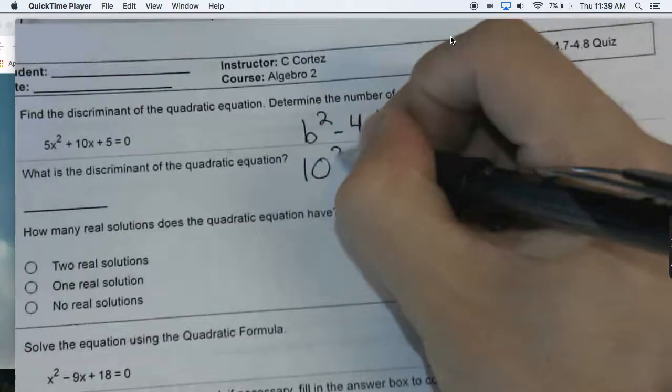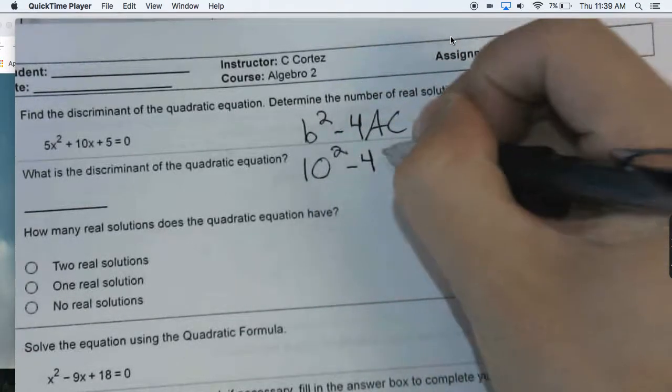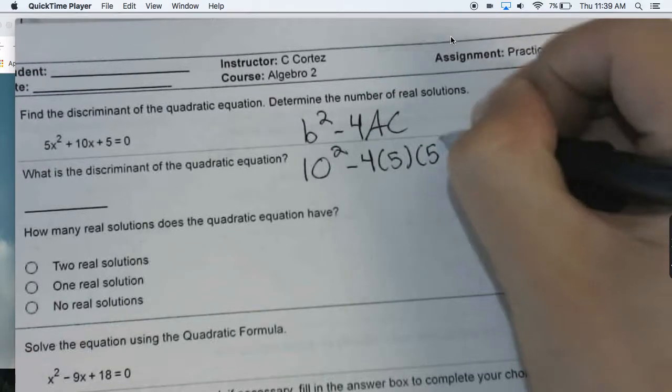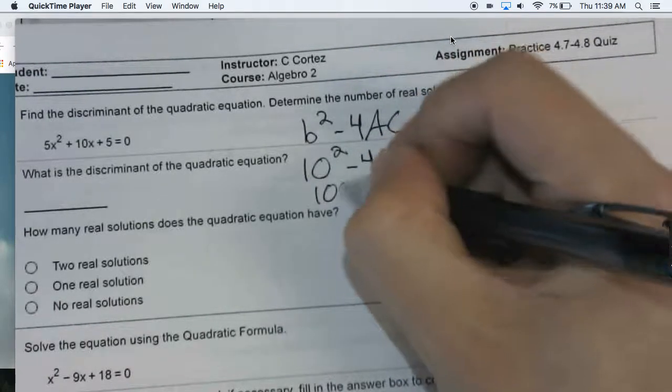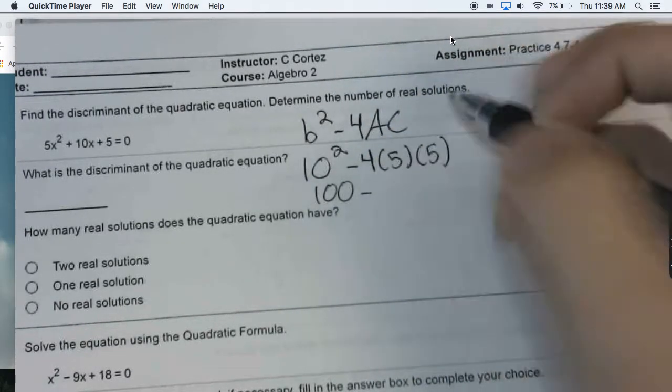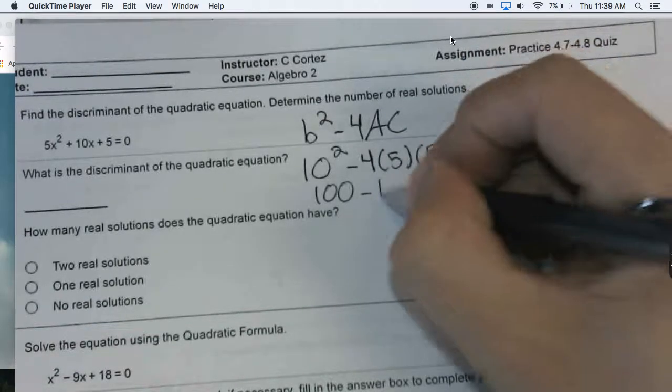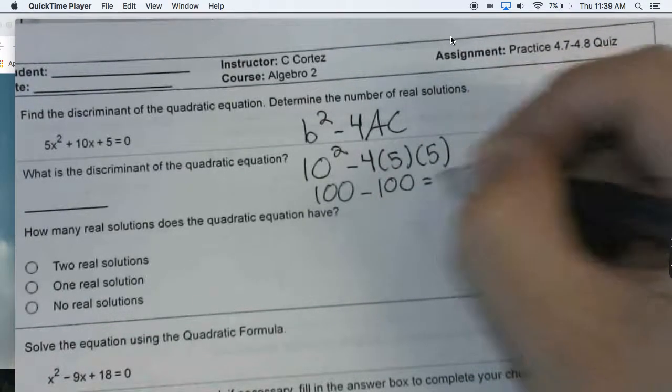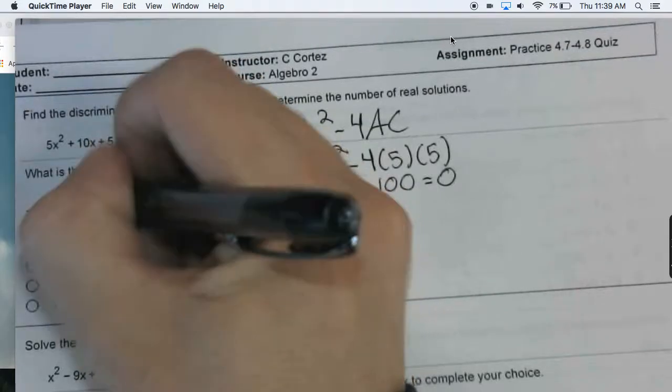Your b term here is 10, so you're squaring 10. You're subtracting 4 times a, which is 5, where c is 5. So this arithmetic is going to say 100 minus this product, which is eventually 100 minus 100, which is 0. So your discriminant here is 0.